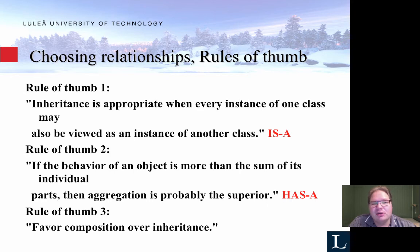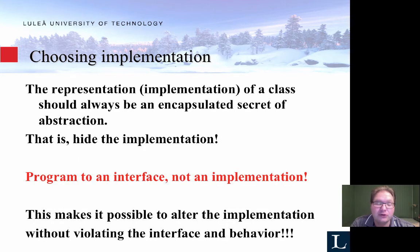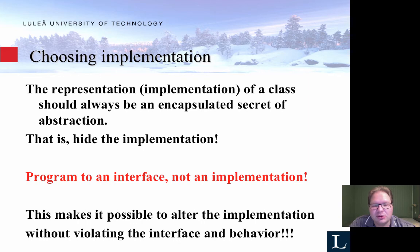Some good practices as rules of thumb: inheritance is appropriate when every instance of one class may also be viewed as an instance of another — it's an 'is-a' relationship. If the behavior of an object is more than the sum of its individual parts, then aggregation is probably a 'has-a' relationship. You should always favor composition over inheritance, and aggregation over both composition and inheritance. You should always program to an interface, not an implementation. This has to do with encapsulation — you don't want to reveal the inner workings of your code. Just show another developer the interface, and they can develop separately without needing to know how it works internally.